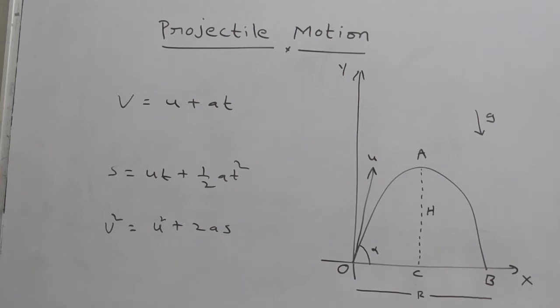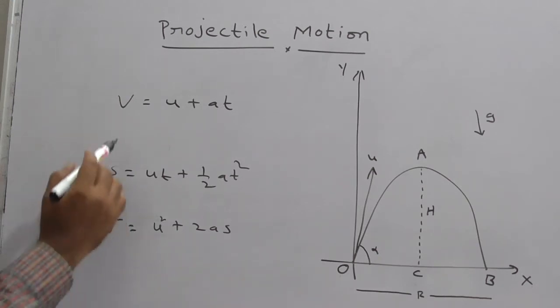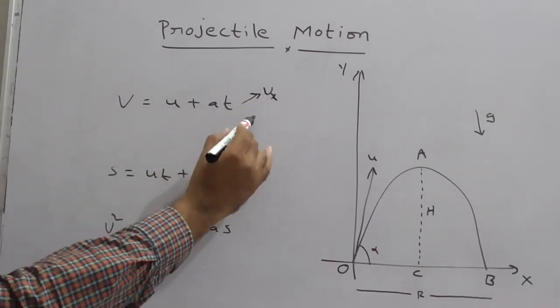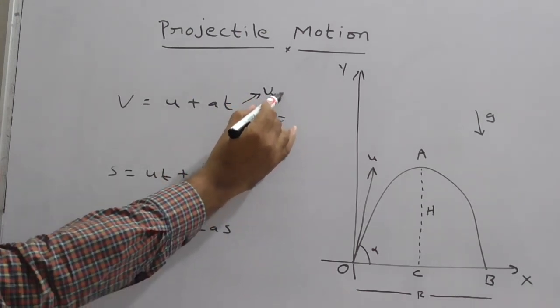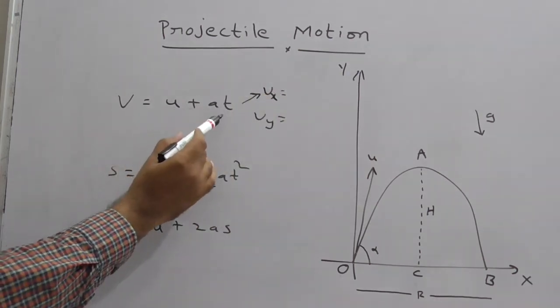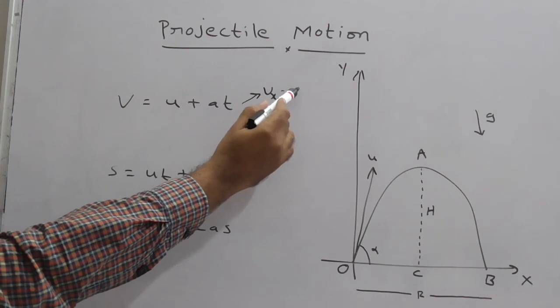But here the projectile motion is two-dimensional, therefore the first formula can be used in vx and vy format. If v = u + at, what is vx?